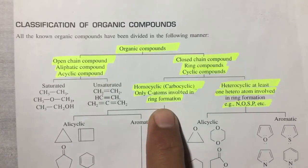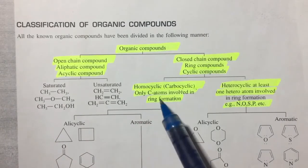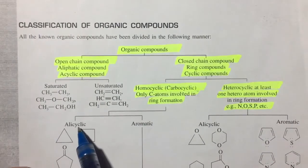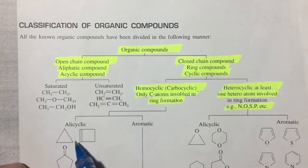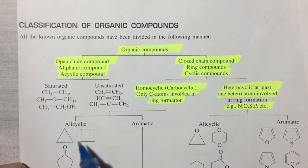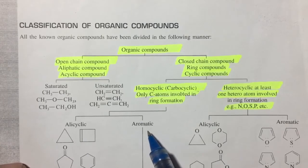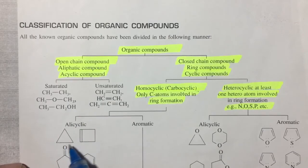Homocyclic compounds are of two types: number one, alicyclic, and number two, aromatic. In alicyclic compounds, a benzene ring does not exist. Alicyclic compounds do not have a benzene ring — this is the key distinction between alicyclic and aromatic compounds.